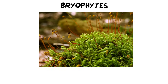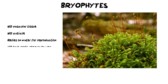Bryophytes are the simplest plants that we are going to be looking at, and there are a couple of reasons why they are the simplest. These defining qualities include the fact that they do not have any vascular tissue. Remember, vascular tissue refers to things like xylem and phloem, which means that these plants can't grow very big at all.